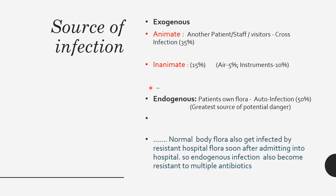There are two sources of infection: exogenous and endogenous. In exogenous sources there are two types — animate (living things) and inanimate (non-living things). Animate sources include patients with infectious disease, staff, visitors, and cross-infections such as patient-to-patient or staff-to-patient. Inanimate objects account for about 15 percent, including air, which accounts for about 5 percent.